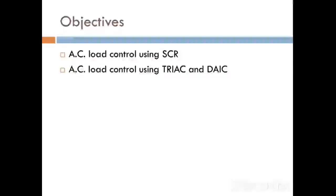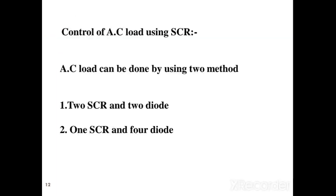The objective of this topic is to understand how AC load can be controlled using SCR, and using Triac and Diac also. There are two methods by which we can control AC load. The first one is by using 2 SCRs and 2 Diodes, and the second method is by using 1 SCR and 4 Diodes. We will discuss each one in detail.